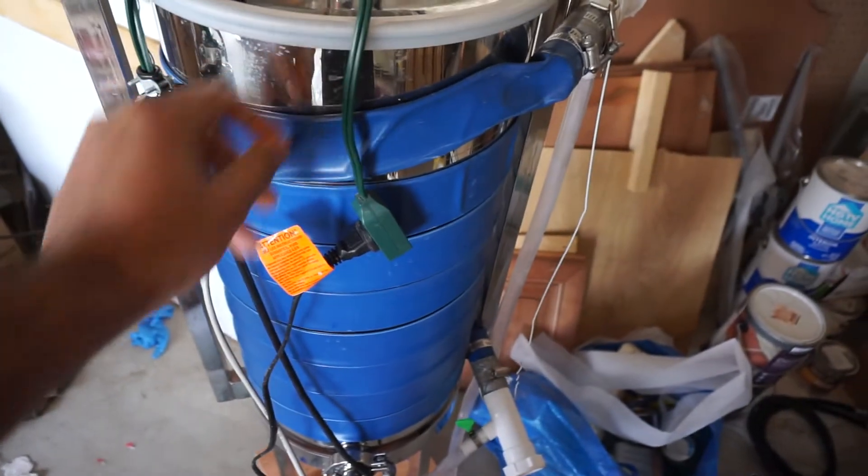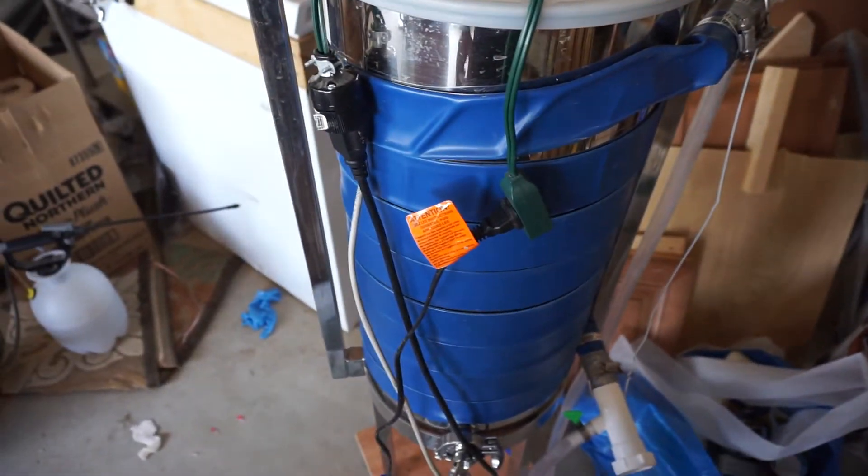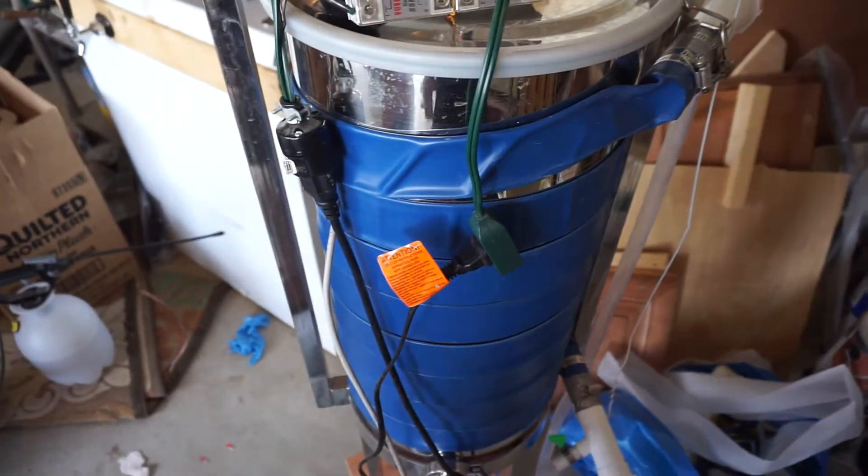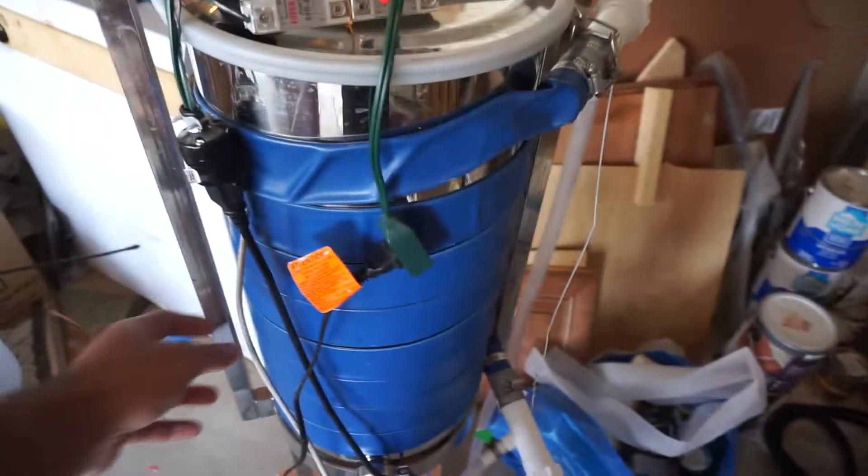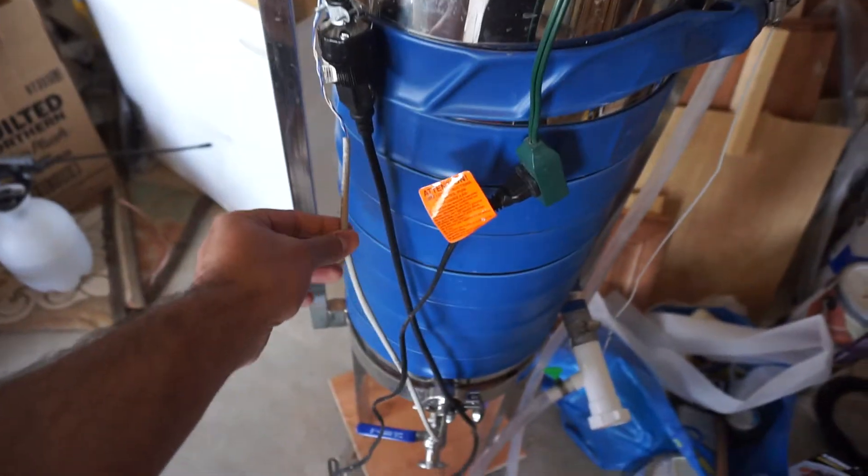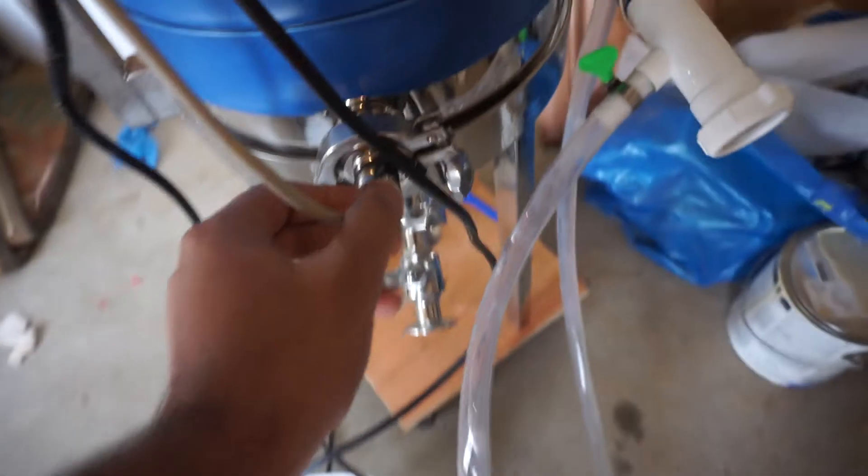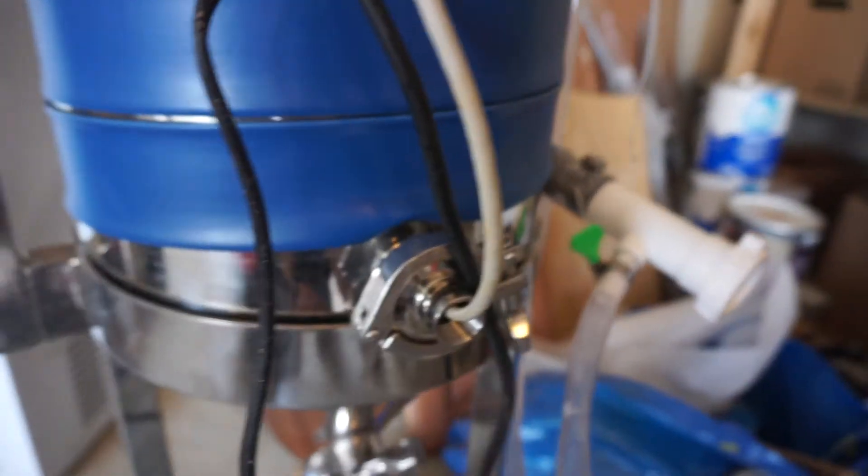You just wrap it around the conical fermenter here and then I have a temperature controller here. It's actually going into a thermo well, sensing the temperature here.